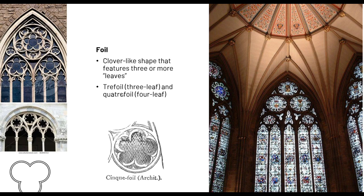A foil is the clover-like shape that features three or more leaves — similar to a Hidden Mickey shape, that carved flower-like detail. Not necessarily circular; if it's pointy like this, it can also be called a foil. A trefoil denotes three leaves. A quatrefoil has four. A cinquefoil — one, two, three, four, five — has five leaves. The foil is not necessarily round; it can be pointy as well. That is your foil.